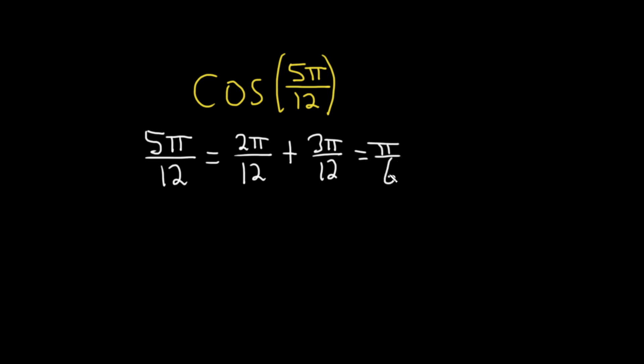And then 3π over 12 is the same thing as π over 4 because 3 goes into 12 four times.